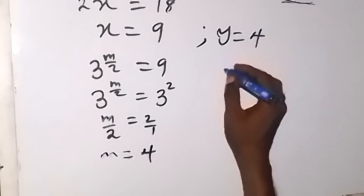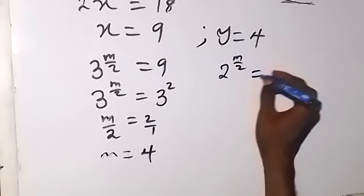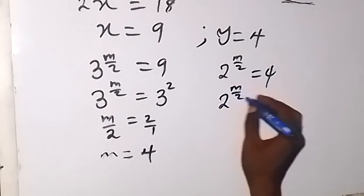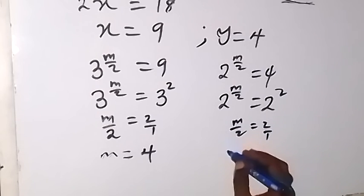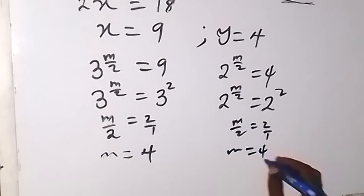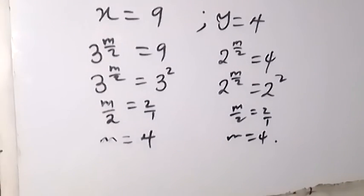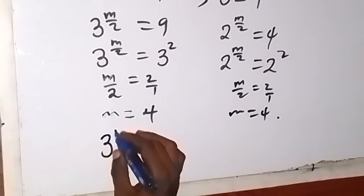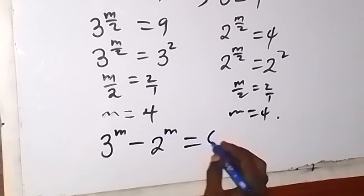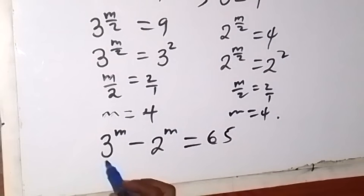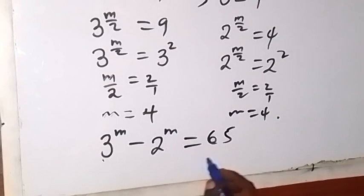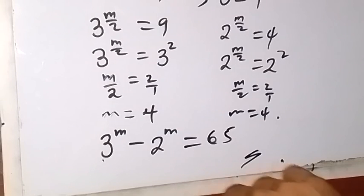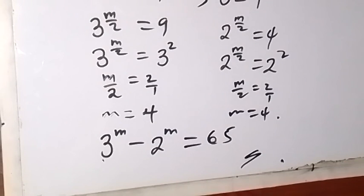We can verify by substituting m equals 4 back into the original equation: 3 raised to power 4 is 81, minus 2 raised to power 4 which is 16. 81 minus 16 gives us 65, confirming our answer. So the solution to the problem is m equals 4. If you are just joining us, don't forget to subscribe to this channel for more videos. Thank you for watching, see you in the next class.